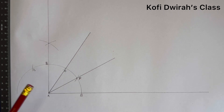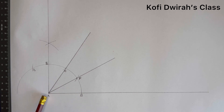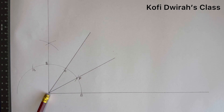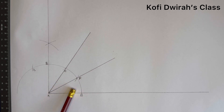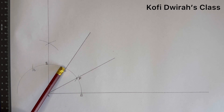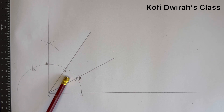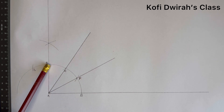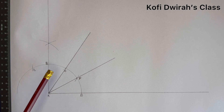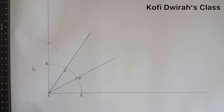Now the angles here are: angle FAB is 30 degrees, angle CAF is also 30 degrees, and angle EAC is also 30 degrees.